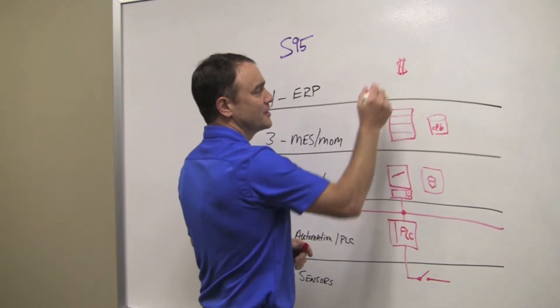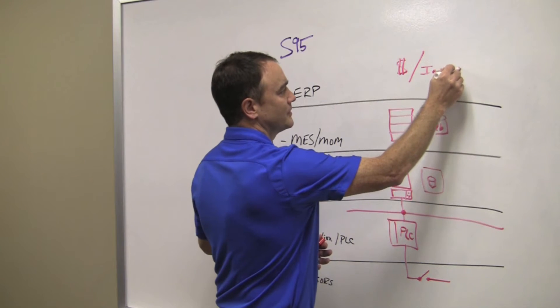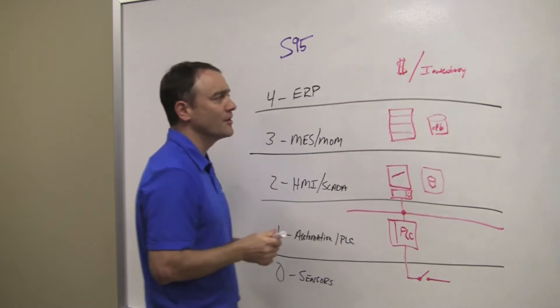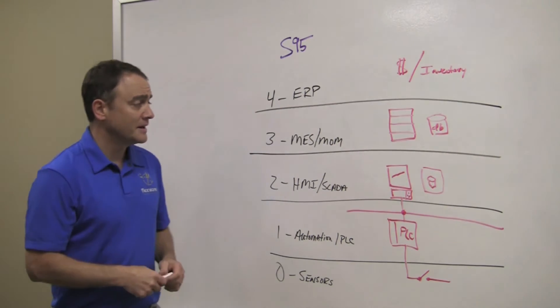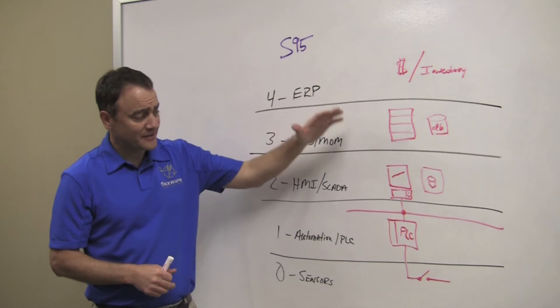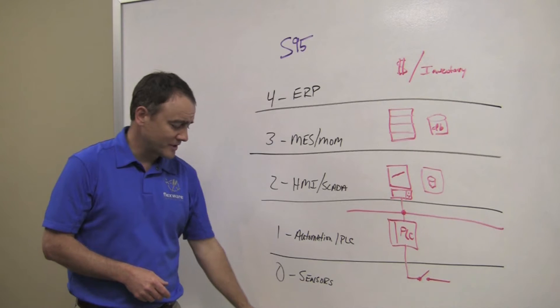And then up here with ERP, that's usually where your dollar signs are, your inventory, maintenance, all kinds of things are stored up in the enterprise resource planning space. And again, this is the hierarchy of the systems inside the plants and the space that FlexWare plays in.